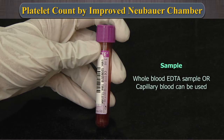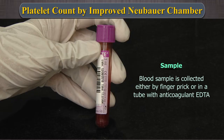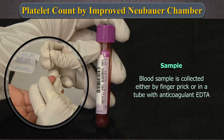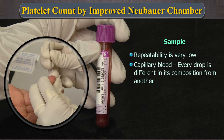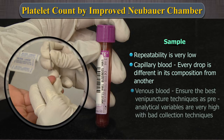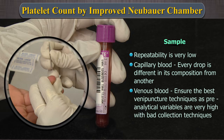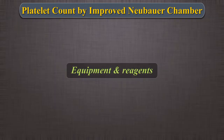Sample: Whole blood EDTA sample or capillary blood can be used. Blood sample is collected either by finger prick or in a tube with anticoagulant EDTA. It is to be noted that manual platelet counting is a test very difficult to standardize. The repeatability is very low. If capillary blood is used, this becomes even harder as every drop may be different in its composition from another. For venous blood, ensure the best venipuncture techniques as pre-analytical variables are also very high with bad collection techniques.